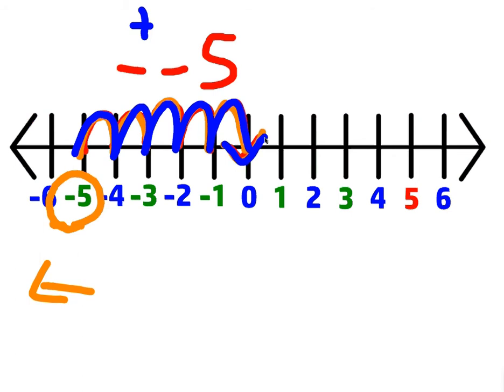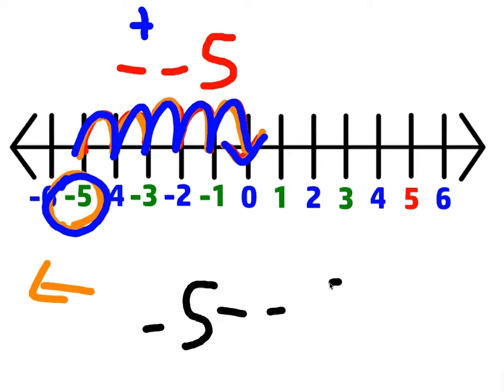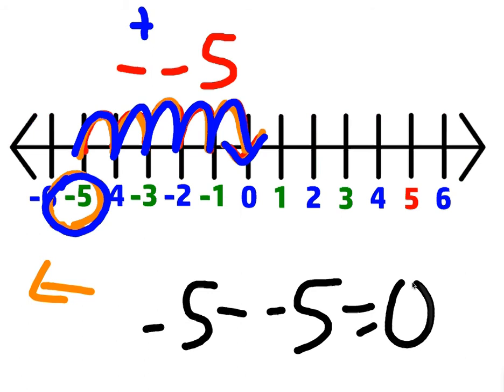This lesson is so simple — sometimes we overcomplicate it. You always just subtract the number you started with. In this case, you started with negative 5, so you subtract negative 5. The way to write this out is negative 5 minus negative 5 gives you 0. It's actually a very simple concept.